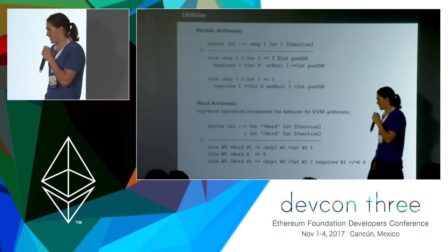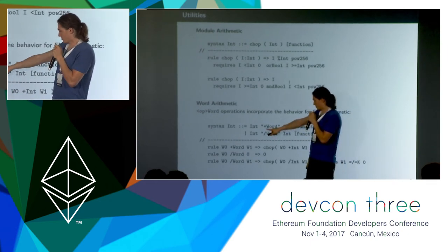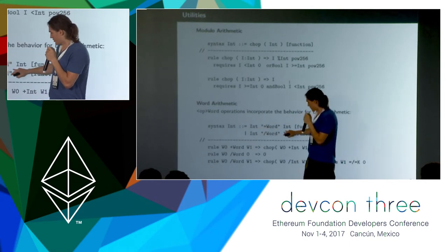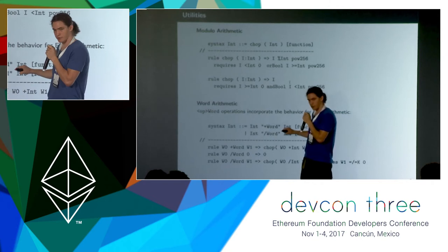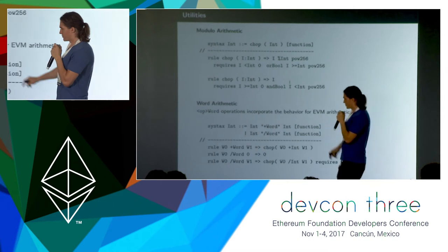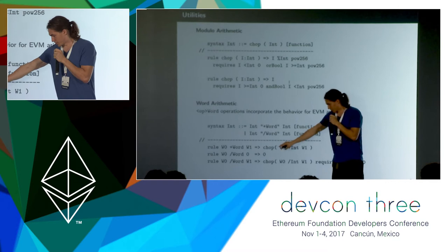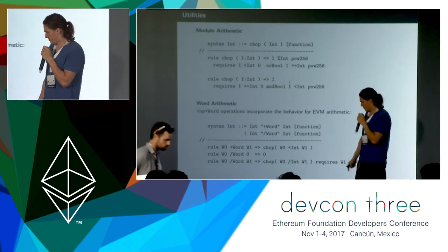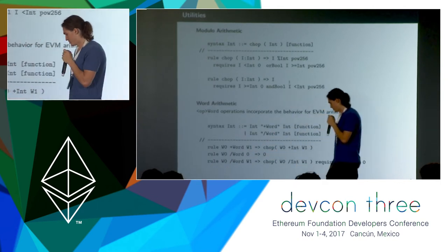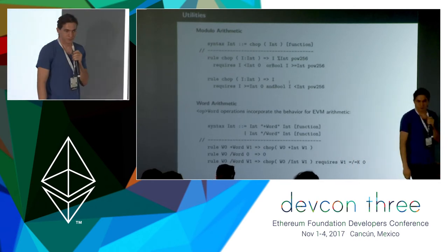Some other operators we define — these are just a fraction of them for demonstrating. For example, there's this plusWord operator, and notice we can define the syntax right here to be infix, so we can say something like 3 plusWord 4 instead of plusWord(3, 4). We declare that it's a function and give semantics by calling the built-in plus-int operator and then calling chop on top of it. Notice we also give semantics to division — this one has to be broken into two cases: dividing by zero, which in EVM is defined to be zero, and not dividing by zero, in which case we just call chop on the normal division.